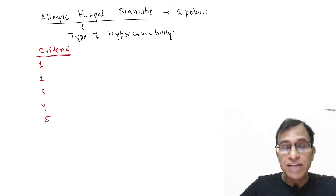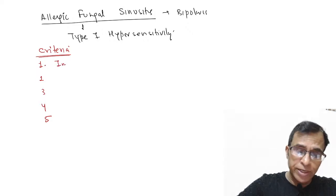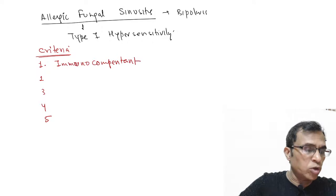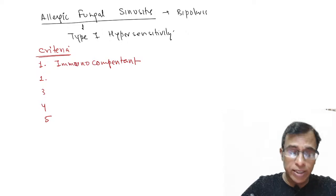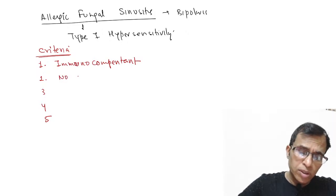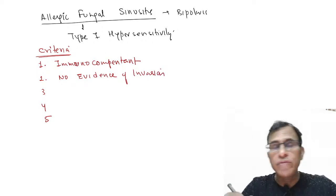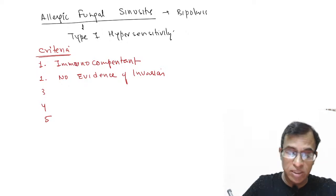You will notice that these five diagnostic criteria are almost the opposite of mucormycosis and fulminant fungal sinusitis. First, it is seen in an immunocompetent person — not immunocompromised, no diabetes, no steroids, nothing of that sort. Second, there is no evidence of invasion — it is a non-invasive fungal disease, unlike the previous two which were both invasive.